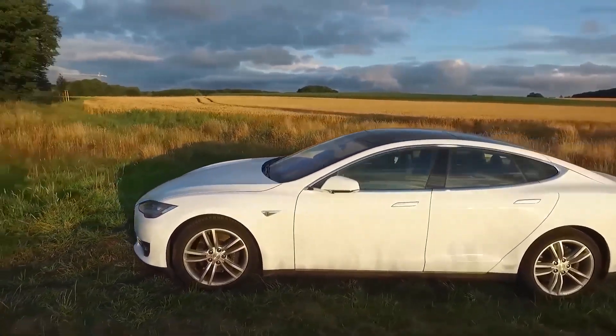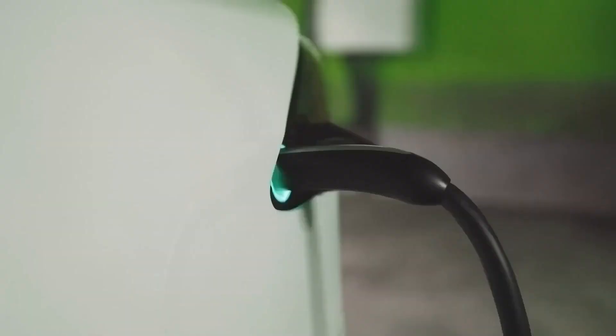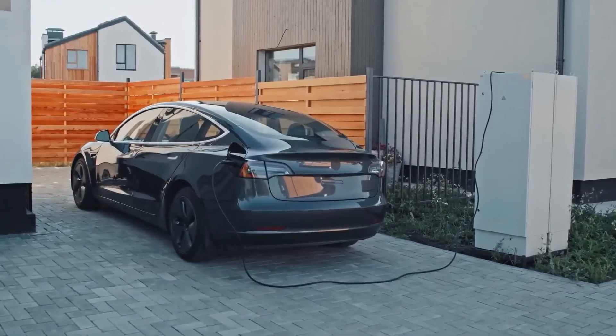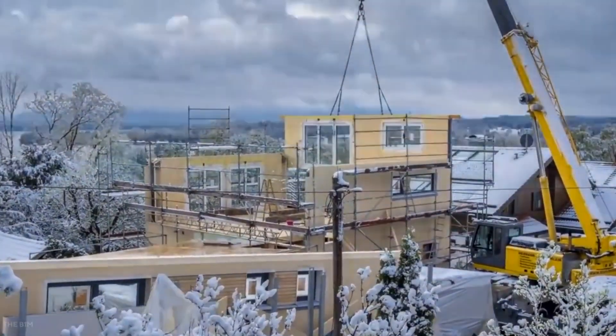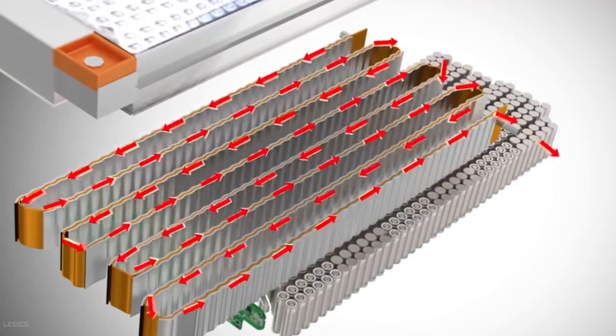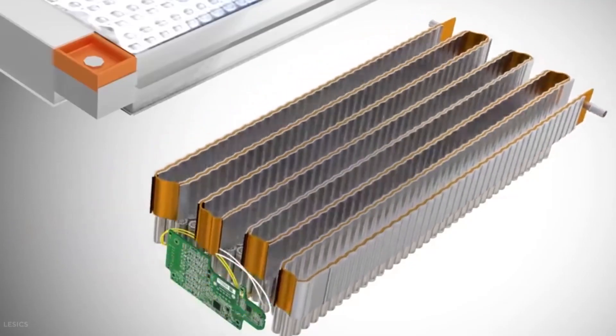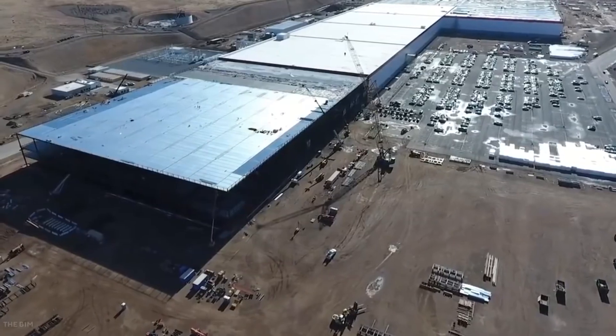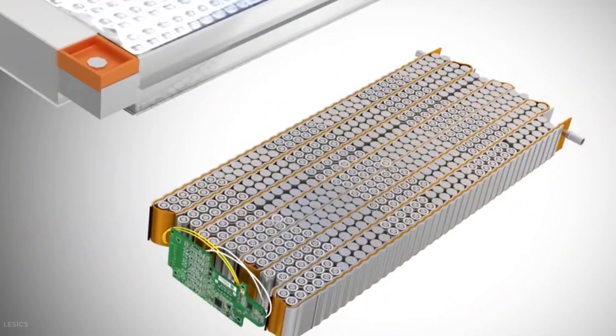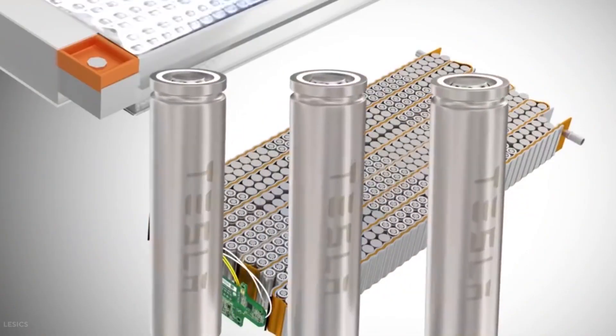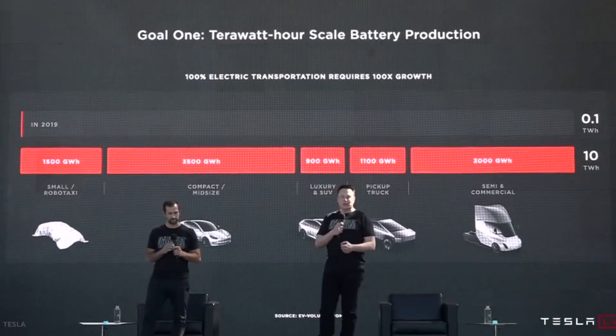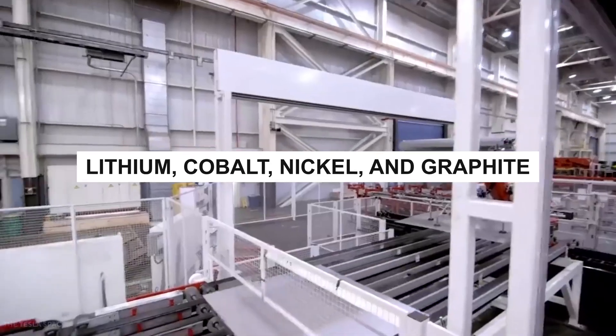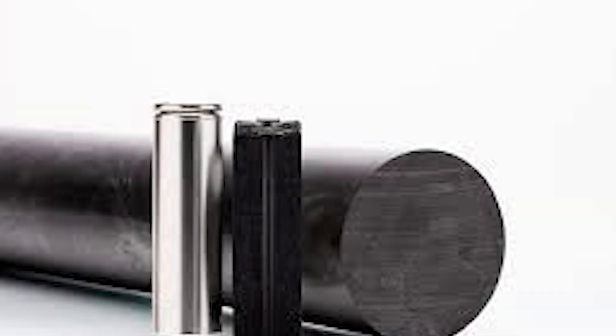Tesla claimed that it couldn't get enough graphite from other sources and sought the American government to remove tariffs on graphite from China. According to industry estimates mentioned in Syrah's presentation, Vidalia's initial 10,000-ton-per-year production rate would be able to meet around 3% of the demand for batteries in the United States by 2025. The world's leading battery and electric vehicle manufacturers are scouring the globe to secure supplies of battery materials like lithium, cobalt, nickel, and graphite as the push for a more environmentally-friendly future.